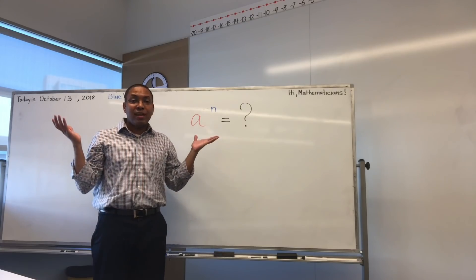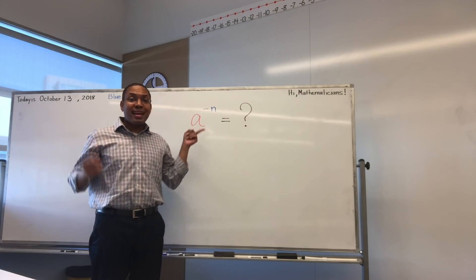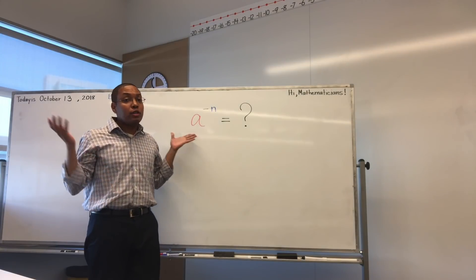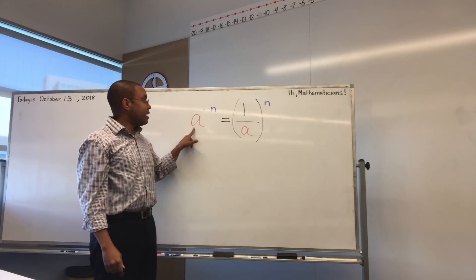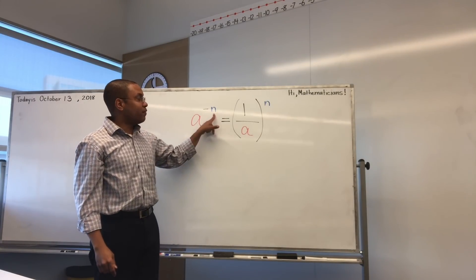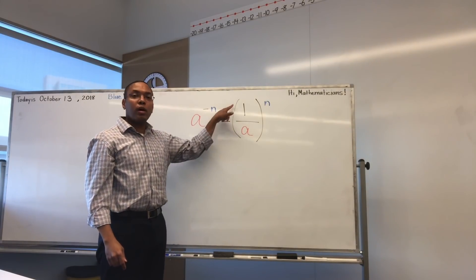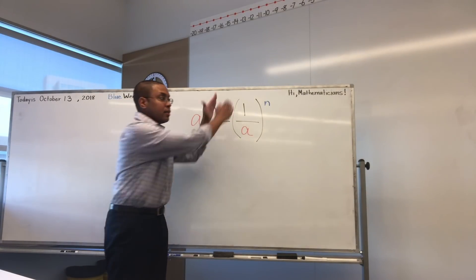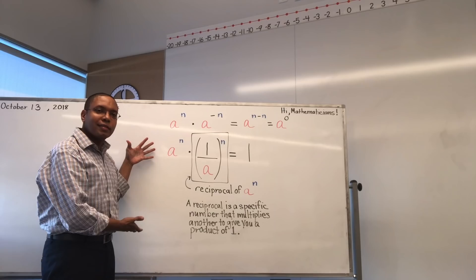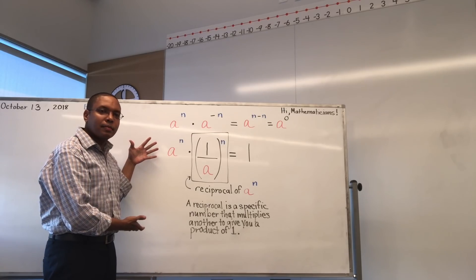And what if you end up with a negative? What do you do? A to the negative nth equals one over A to the nth — it's the reciprocal. Now you understand me too — I mean squared. Hee hee.